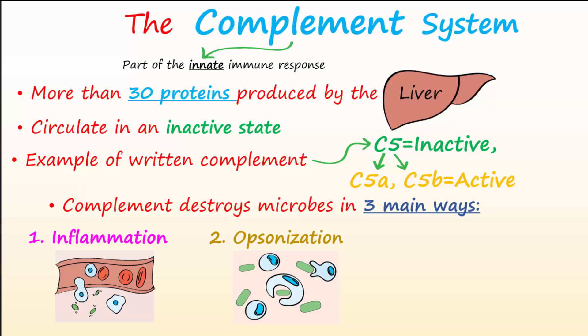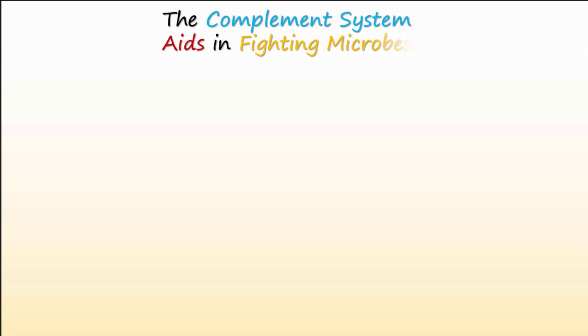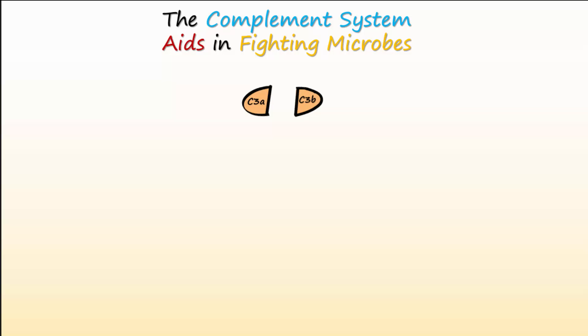The three main ways are: first, inflammation; second, enhanced phagocytosis, also known as opsonization; and third, by causing bacterial lysis or cytolysis. This process starts with the activation of C3. When C3 is activated, it splits into C3A and C3B.